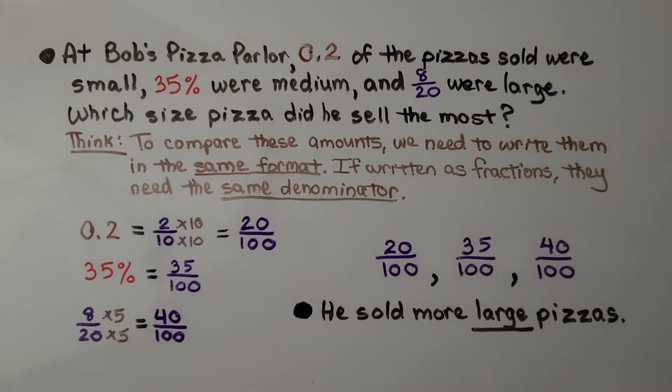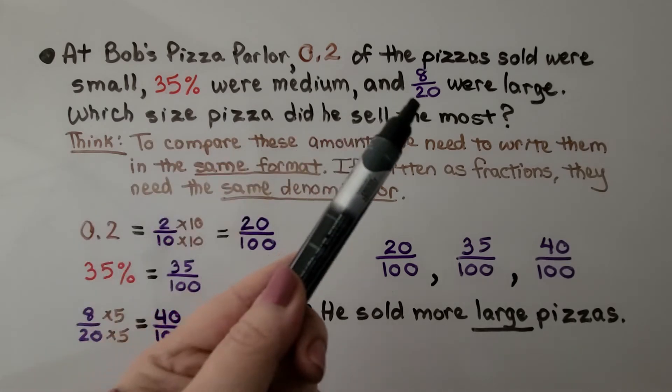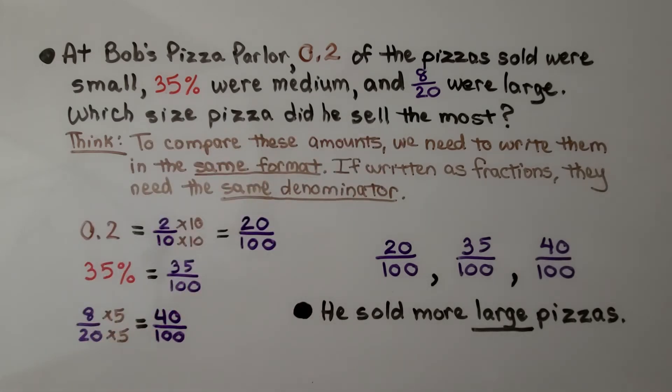At Bob's Pizza Parlor, 0.2 of the pizzas sold were small, 35% were medium, and 8/20 were large. Which size pizza did he sell the most? To compare these amounts, we need to write them in the same format. We've got a decimal, a percent, and a fraction. If written as fractions, they need the same denominator.